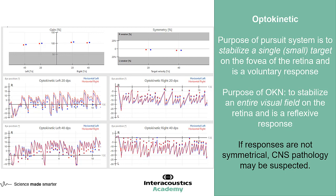We can also look at the slow phase velocity of that nystagmus and calculate a symmetry value to see whether we have any lesions or changes that are predominantly moving either to the left or to the right direction.